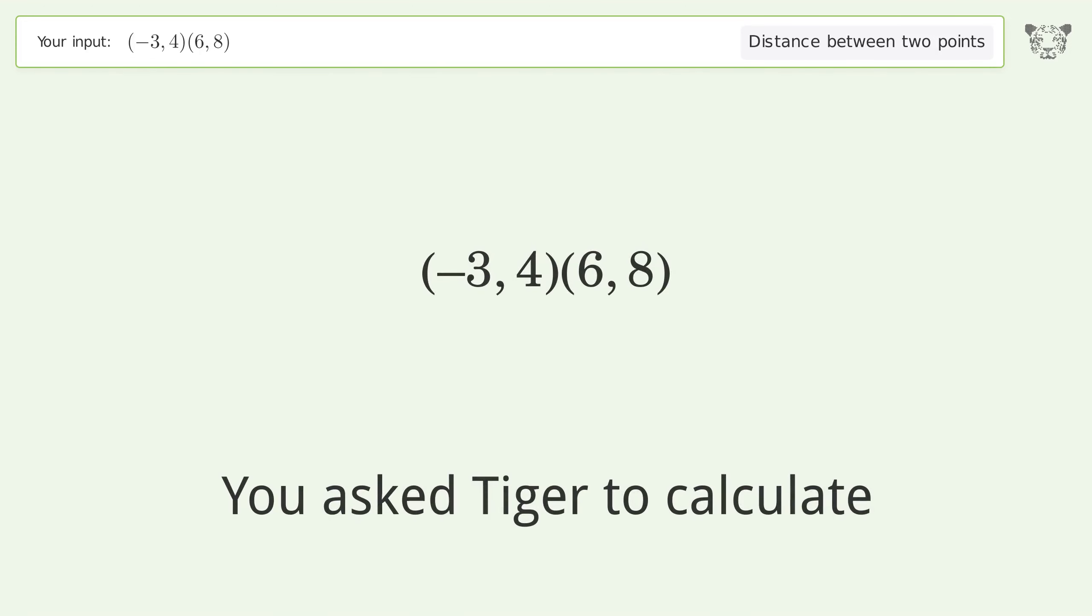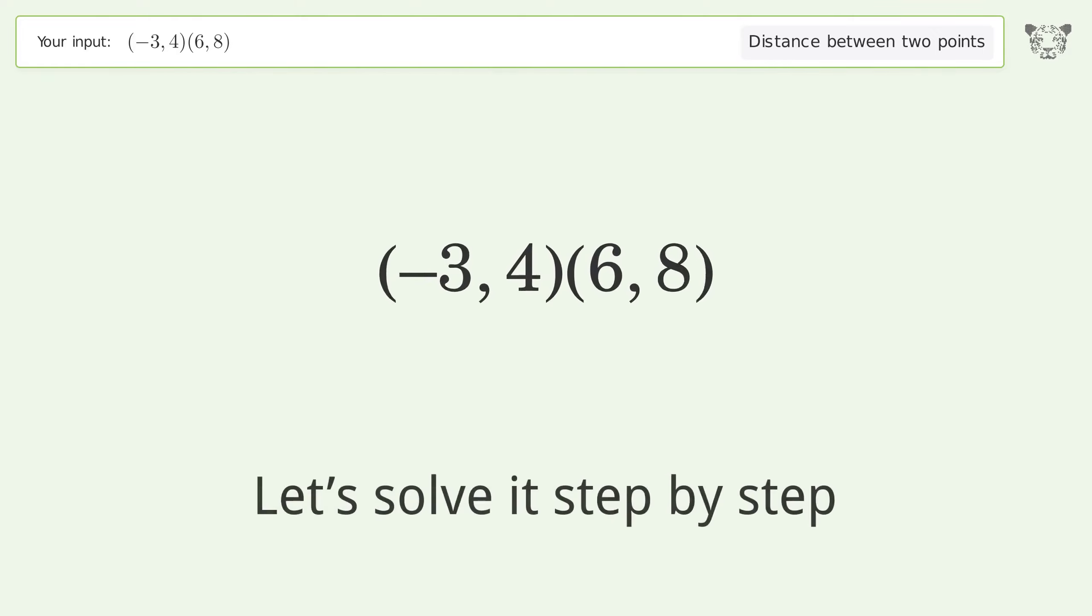You ask Tiger to calculate the distance between two points. The distance between the two points is the square root of 97, or 9.849. Let's solve it step by step.